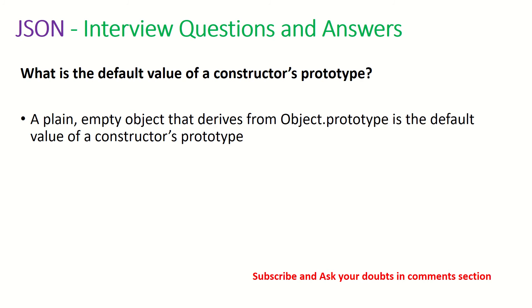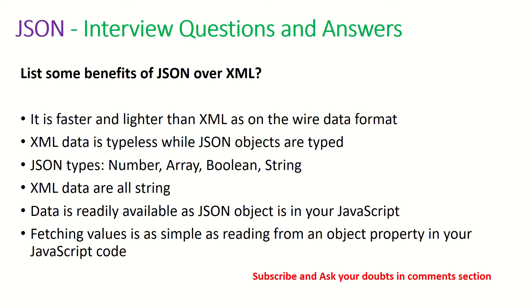What is the default value of a prototype? A plain empty object that derives from Object.prototype is the default value of a constructor's prototype. Now, some of the benefits of using JSON over XML: since JSON is text-based, it's much lighter and faster. XML data types are typeless while JSON objects are typed — JSON types include number, array, boolean, and string, whereas XML data are all strings. Data is also readily available as a JSON object in JavaScript. That's why JSON is always preferred over XML in modern web applications.